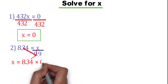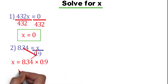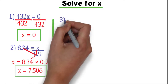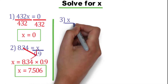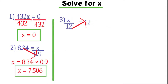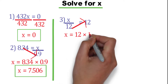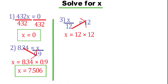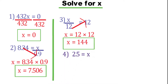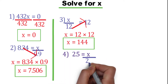Now x equals 0.9 times 8.34. We get x equals 7.506. Number 3: x over 12 equals 12. Multiply 12 by 12 to find the value of x. Now x equals 12 times 12, so x equals 144. Number 4: 2.5 equals x over 2.5.